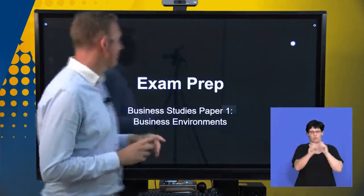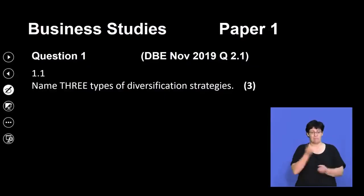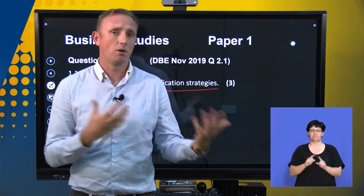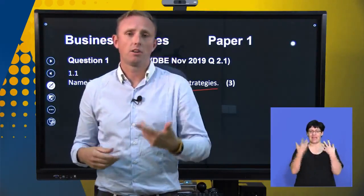Hi Matrix. Welcome to your preparation for paper one, in particular the business environments. We'll be discussing all the recent legislation that will impact on the business strategies as well as the different sectors. We're going to get into some questions first. Name the three types of diversification strategies. You're going to have to know your different types of strategies in terms of whether they are intensive, integration, diversification, or defensive.